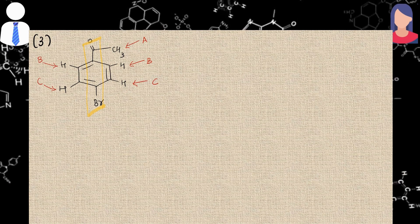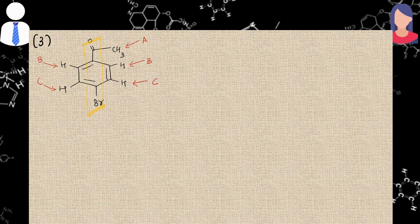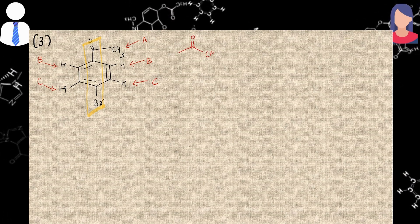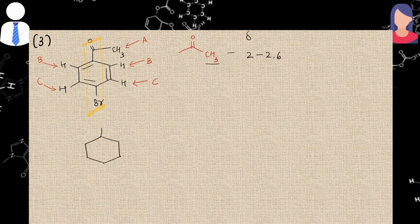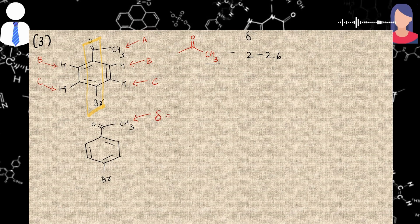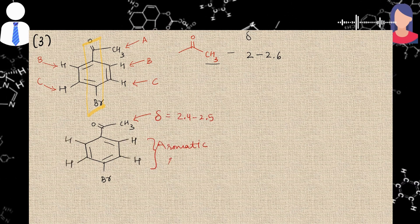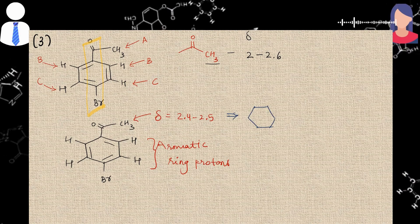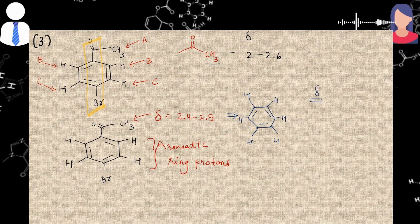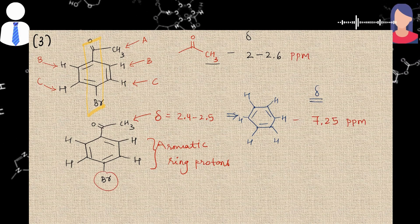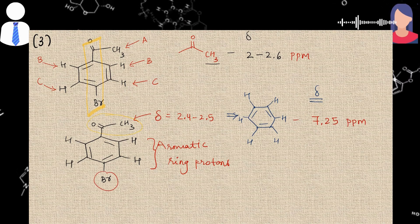Then he asked me about the chemical shift values. Now you can't tell exactly about the chemical shift values, but I was aware of its range. Now generally acetyl protons range from 2 to 2.6, so I said for the protons A it will be somewhere around 2.4 to 2.5. And protons B and C are benzene ring protons. Now for benzene ring protons, chemical shift value is around 7.25, but it varies as per the substituent attached to the ring.